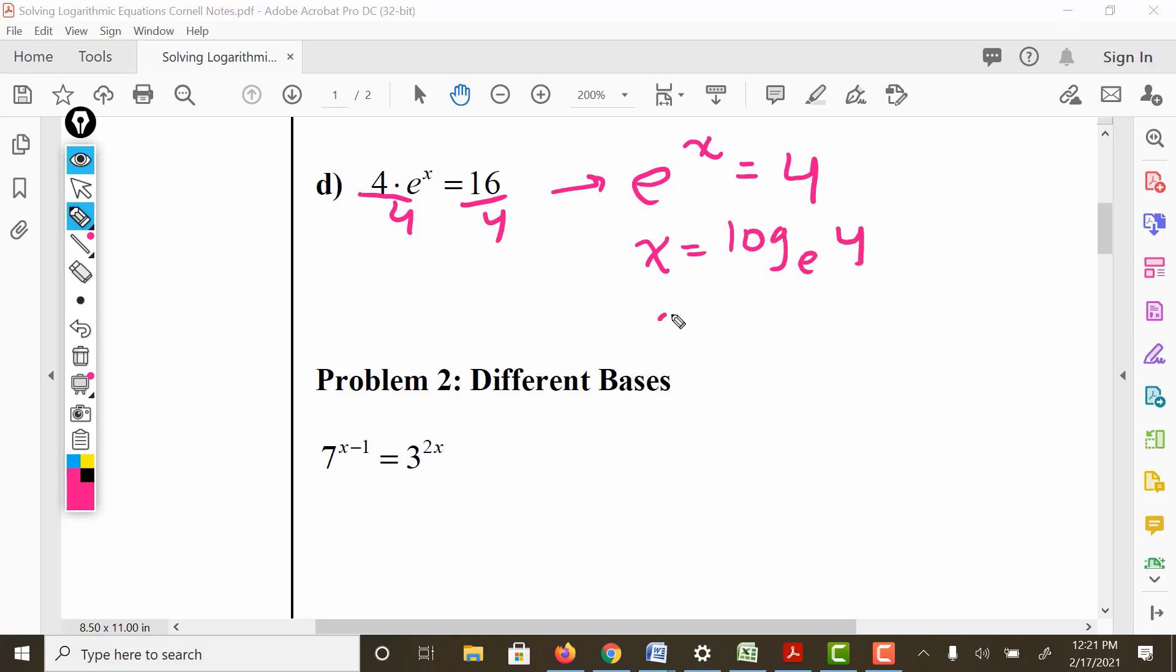However, log base e is also known as the natural logarithm. So this is the answer. If I wanted a decimal value, I'd put it in the calculator and type in natural log 4, and I would get a value of approximately 1.386.